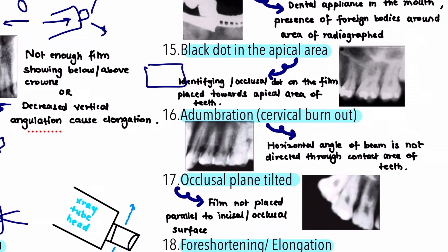The next error is a black dot seen in the apical region. On the x-ray film there is an occlusal dot, and if the film is placed in the opposite direction with the occlusal dot at the apical end rather than occlusally, it produces a black dot in the apical area. The correction is to always place the film with the embossed (raised) occlusal dot towards the occlusal surface of the teeth.